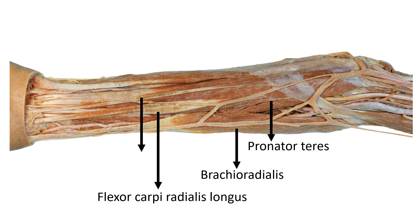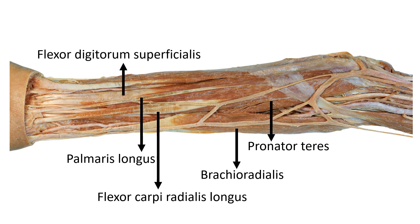Medial to the flexor carpi radialis longus, we can identify the long tendon called palmaris longus. Then medial to the palmaris longus tendon, we can identify the flexor digitorum superficialis muscle. And medial to the flexor digitorum superficialis is the flexor carpi ulnaris. These are the muscles present in the superficial layer.